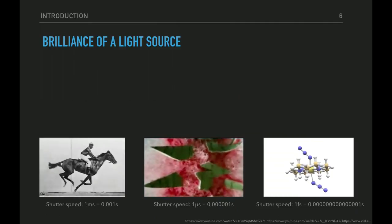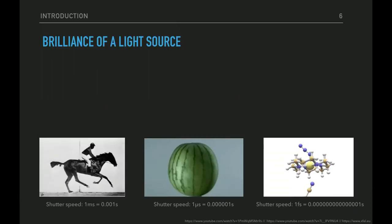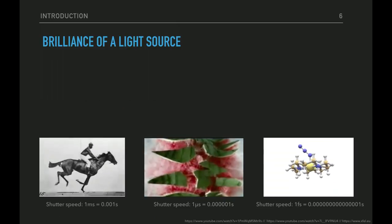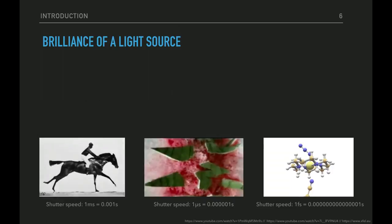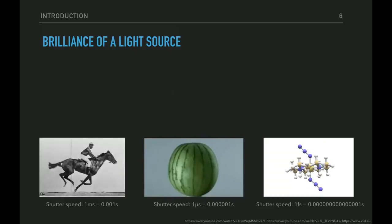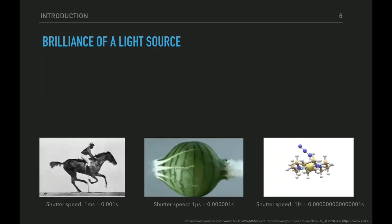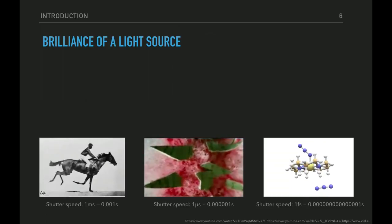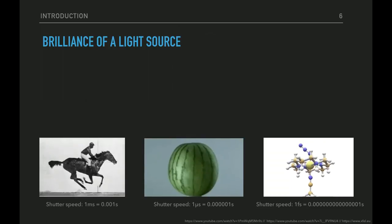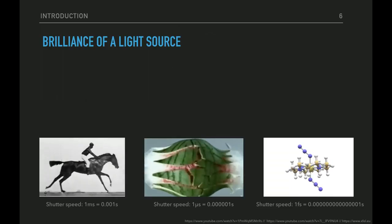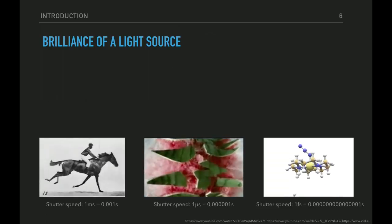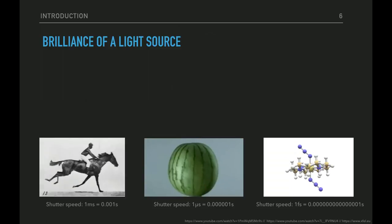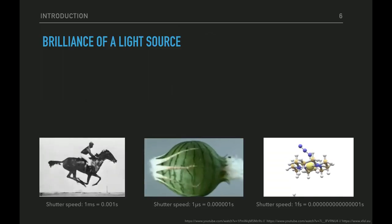Wenn wir ein Bild machen von etwas, das sich bewegt, müssen wir den Shutterspeed herunterskalieren. Für ein Pferd zum Beispiel brauchen wir nur eine Millisekunde. Wenn wir eine Kugel anschauen sollen, die durch eine Mühle schießt, brauchen wir 1000 Frames pro Sekunde. Und wenn wir chemische Reaktionen anschauen wollen, brauchen wir ganz andere Größenskalen. Da braucht man große Linsen, damit man wirklich genug Licht hat, das das Objekt in einer kleinen Zeit trifft.